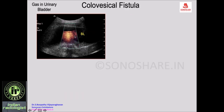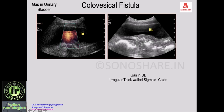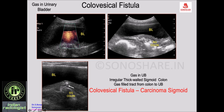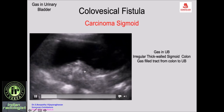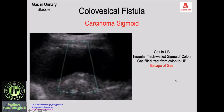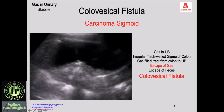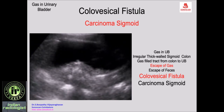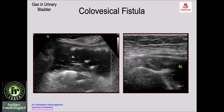Here you see gas in the urinary bladder with an irregular thick-walled sigmoid colon and a tract extending from the urinary bladder to the thick-walled sigmoid colon — suggesting a colovesical fistula. You see the cycle tube sign, gas escaping from the colon into the urinary bladder, and also fecal masses escaping into the bladder. With ultrasound alone you can make a diagnosis of colovesical fistula due to carcinoma of the sigmoid colon.